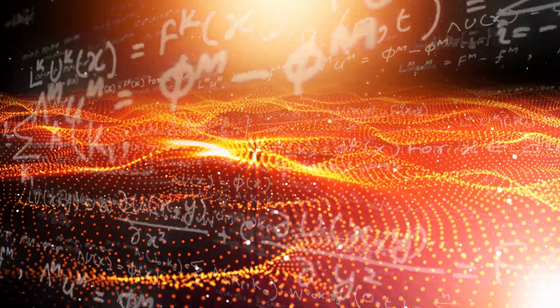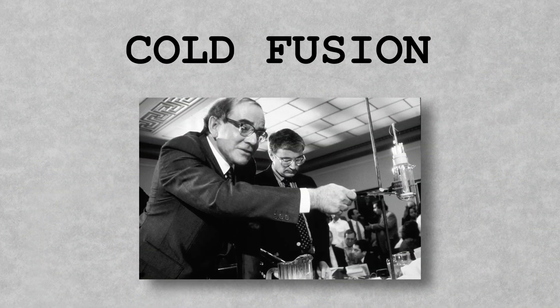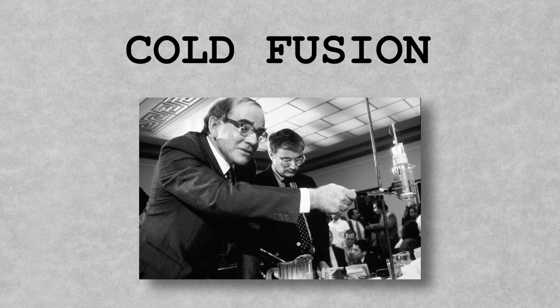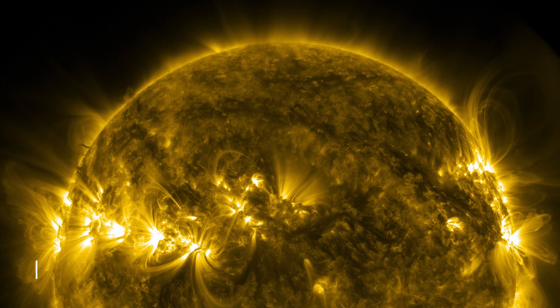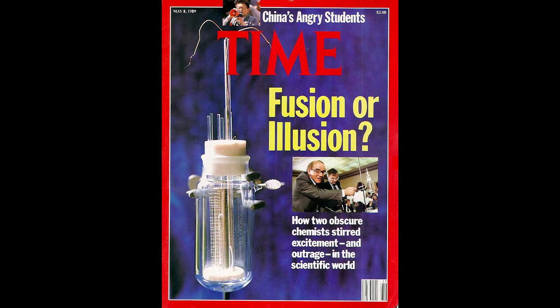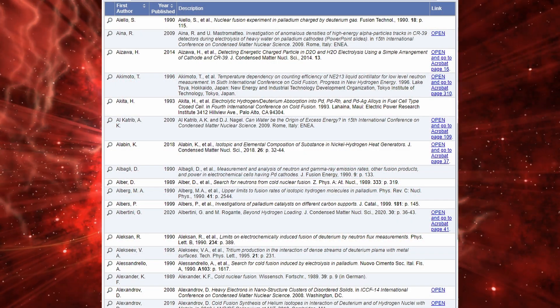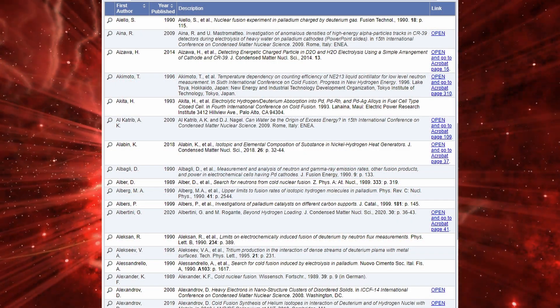Imagine a discovery so revolutionary it could rewrite the rules of physics and redefine how we think about energy. In 1989, Fleischmann and Pons announced just that, an experiment claiming to have achieved cold fusion, nuclear energy without the extreme temperatures of the sun. Their announcement sparked worldwide intrigue, followed quickly by skepticism and outright dismissal.